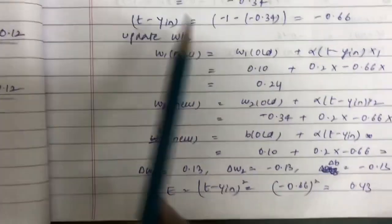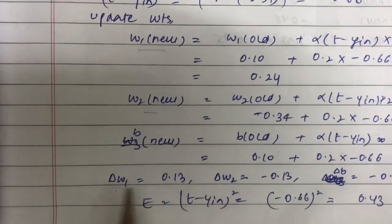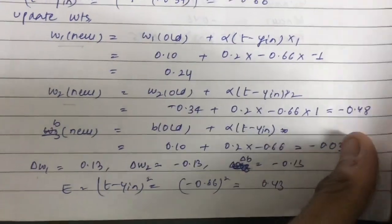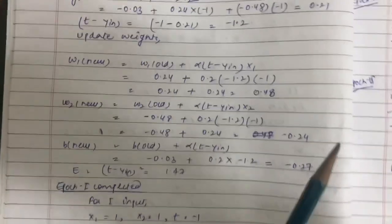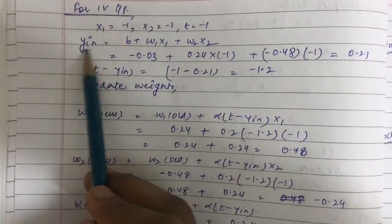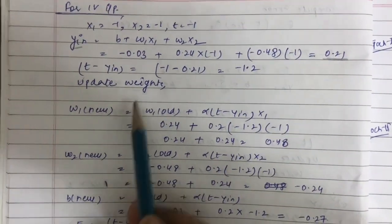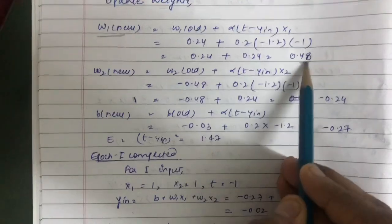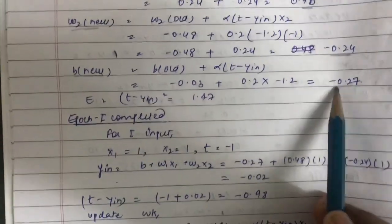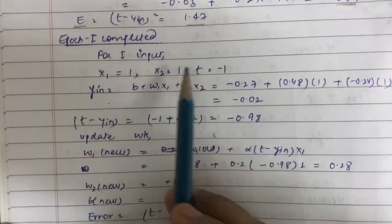Similarly, we calculate for the third input — the values of w1(new), w2(new), b(new), delta_w1, delta_w2, and delta_b are computed. Applying the same procedure for the fourth input: y_in = 0.21. After weight update: w1(new) = 0.48, w2(new) = −0.24, b(new) = −0.27, and error = 1.47.